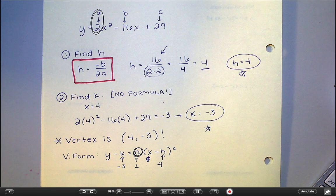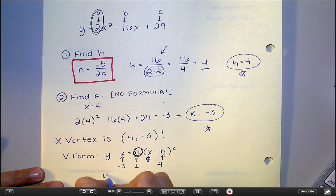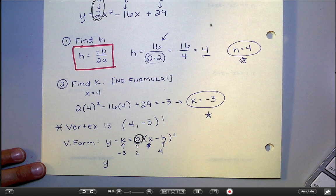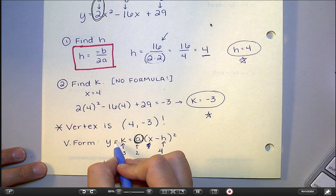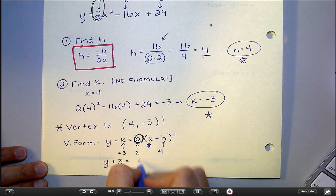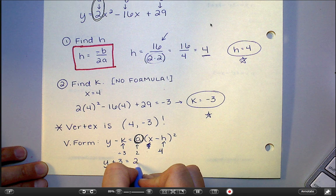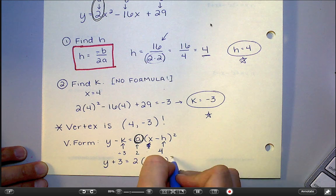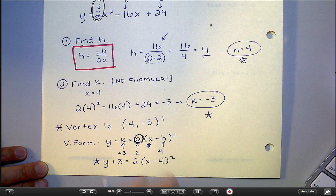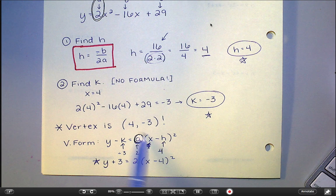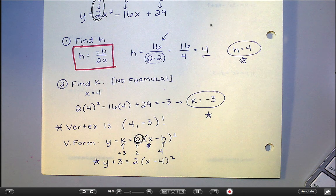And so when I put that all together, this is going to be y. Just be careful here. Because it's minus k, I'm really doing y minus negative 3. So it's going to be a plus 3. Equals my a value is 2. And then x minus 4 squared. And that right there is my final answer in vertex form. So I kind of found vertex form by way of finding the vertex.